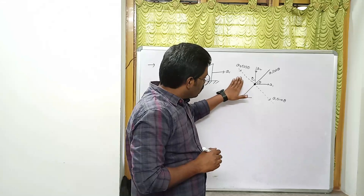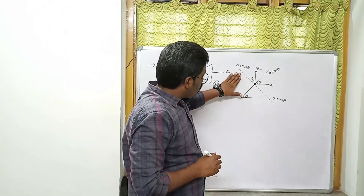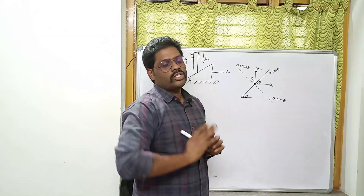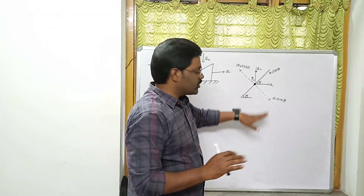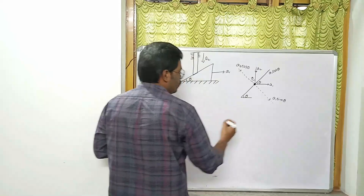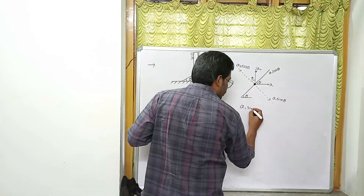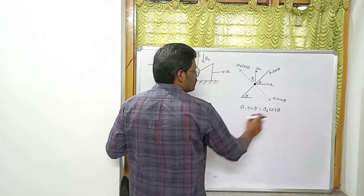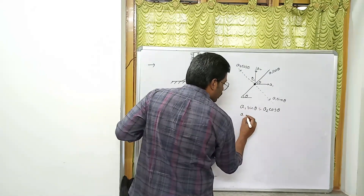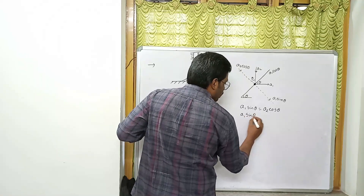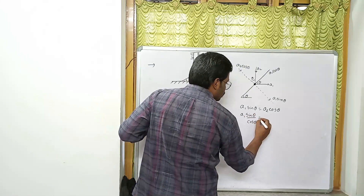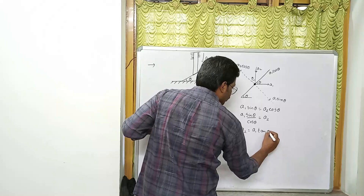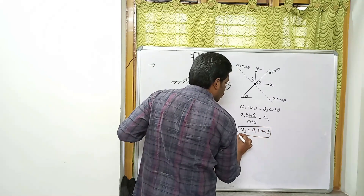Since a2 cosθ and a1 sinθ are both present on the same normal line, we equalize them: a1 sinθ = a2 cosθ. Therefore a2 = a1 sinθ / cosθ = a1 tanθ. In a very simple manner you can get a2 = a1 tanθ.